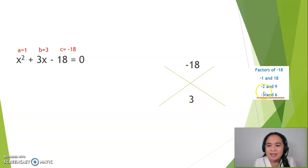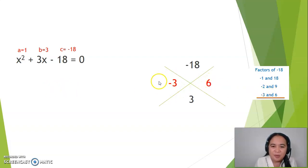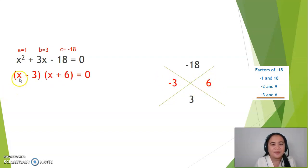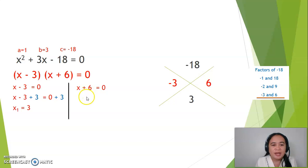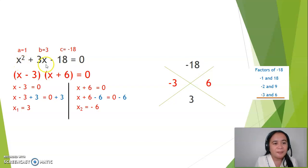Writing this in the pattern f1 over a, we will have negative 3 over 1, or negative 3, and the other one would be 6 over 1, or simply 6. Writing this in binomial form, we will have x minus 3 times x plus 6 equals 0. Solving for the values for x: add 3 to both sides to eliminate negative 3, so the first value for x will be 0 plus 3, or simply 3. For the other side, x plus 6 equals 0 — subtract 6 from both sides, so the second value for x will be 0 minus 6, or negative 6. Therefore, the roots for x squared plus 3x minus 18 equals 0 are 3 and negative 6.